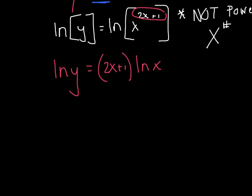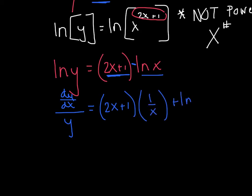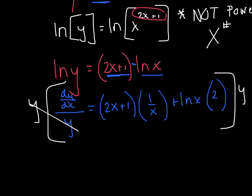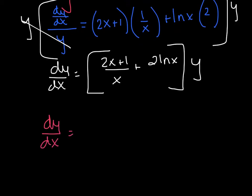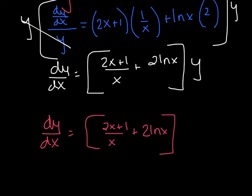Now we're ready to take the derivative. It's implicit - I have y's and x's. So I've got du over u, my u is y, that's dy/dx over y, equals - reading this side, it says 2x plus 1 times the ln of x, so I've got a little product rule: 2x plus 1 times the derivative of the ln of x, plus the ln of x times 2. Lastly, I'll kill that denominator by multiplying both sides by y, because my goal is to solve for dy/dx. So dy/dx equals 2x plus 1 over x plus 2 times the ln of x, all of that times y - and substituting original y back in - times x to the 2x plus 1.